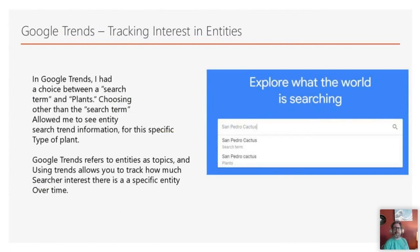Machine ID numbers are commonly used at Google. If you go to Google Trends and do a search for just about anything, you'll sometimes see multiple choices of search types. With the San Pedro cactus, I can choose a search term or I can choose San Pedro cactus plants. When it has something other than search term, it's talking about an entity type. Plants is an entity type for San Pedro cactus, meaning it has a machine ID number associated with it.